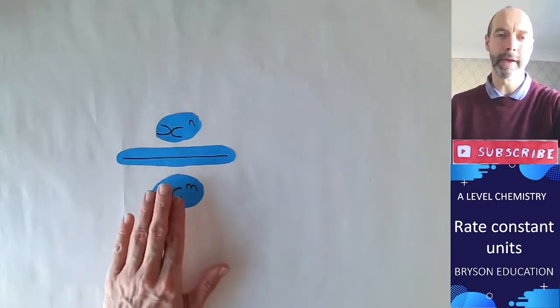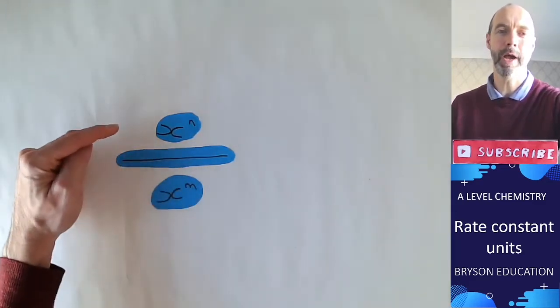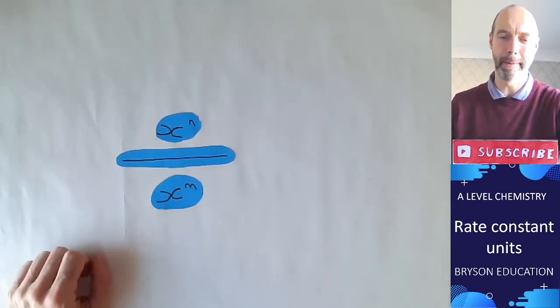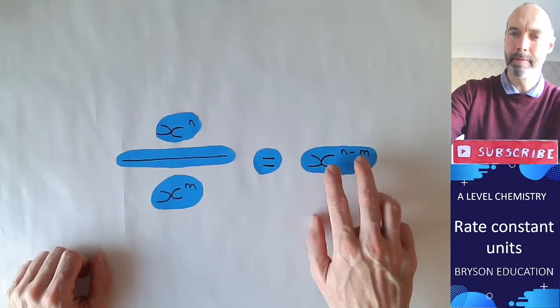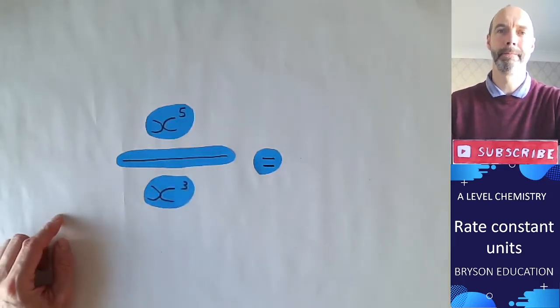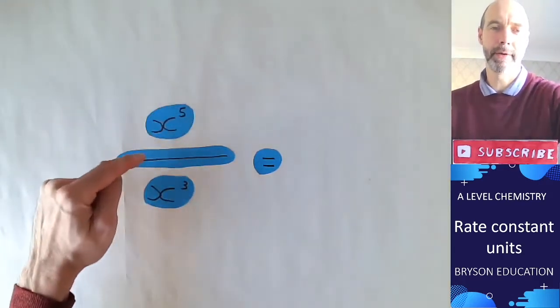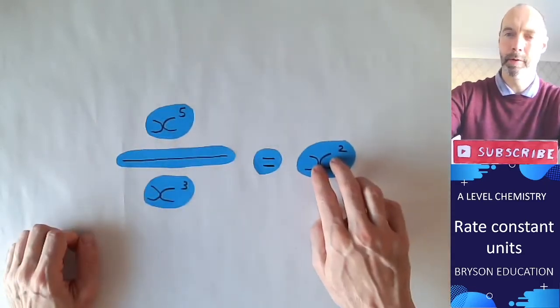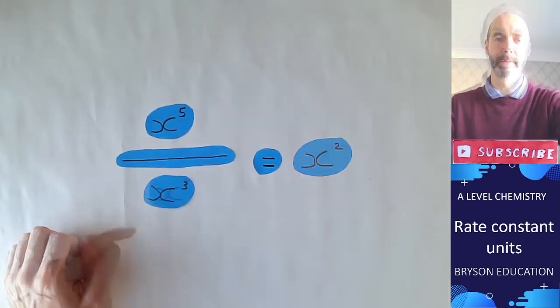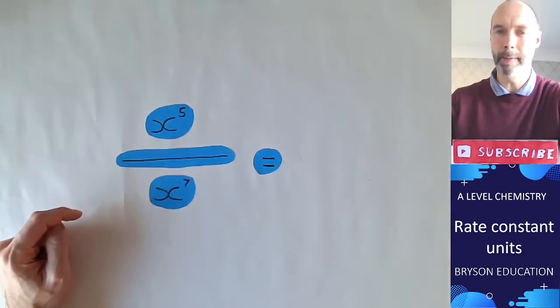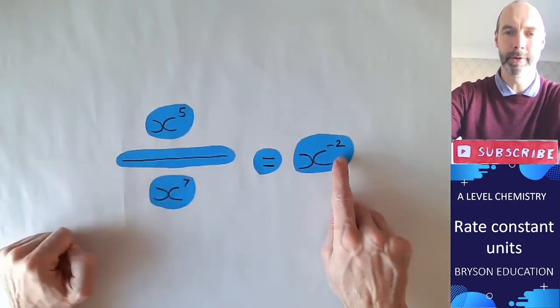Let's look at some laws of indices first from maths. If we have x to the power of n divided by x to the power of m, we subtract those indices so it's x to the power of n minus m. For example, x to the power of 5 divided by x to the power of 3 would be 5 minus 3, which equals x squared. What if the number on the bottom is bigger than the number on the top? We're just going to minus numbers, so it's x to the power of minus 2.